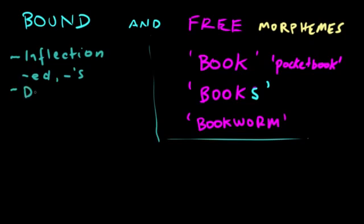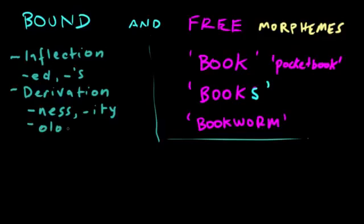Same thing with derivational morphemes. Things like -ness, like happiness or sadness, or -ity. These are bound morphemes that change the part of speech, or the lexical category, of the word that they are attached to. Think of the suffix -ology, like biology or psychology or physiology. It has a meaning. We all know what -ology means when you add it to the end of the word. But that doesn't mean that it can stand by itself. Because of that, it's a bound morpheme.